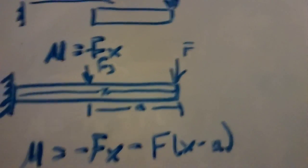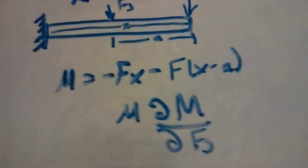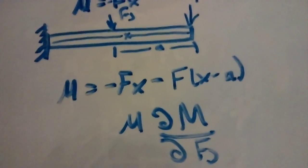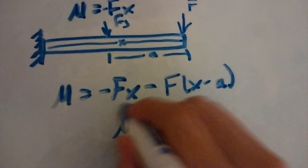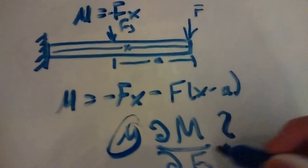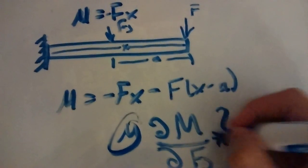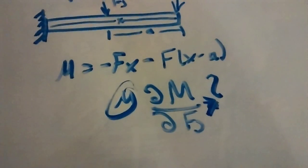Alright, now we can say that we know our M from the formula. We don't know our delta M over Fj. So we know this. We don't know this yet. Let's find that still. Alright, so we don't know that.